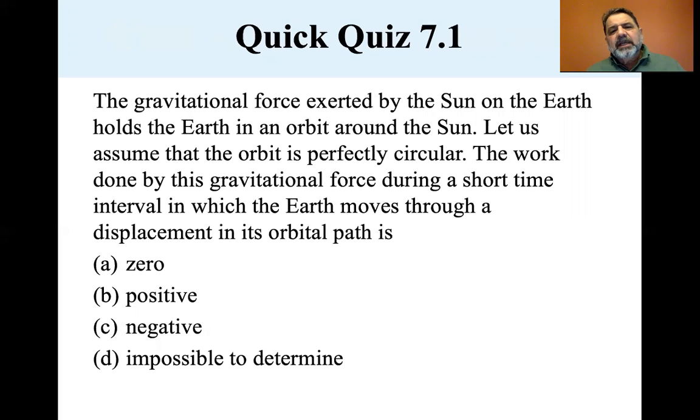So the gravitational force is the centripetal force that keeps the earth orbiting around the sun. So the force, if it's perfectly circular, the displacement in those, the distance from the earth to the sun never changes. So that's zero. So the answer would be zero.